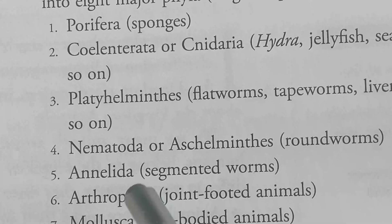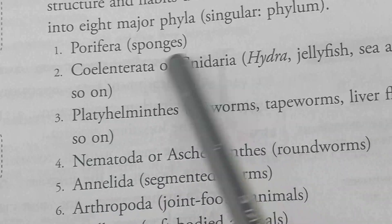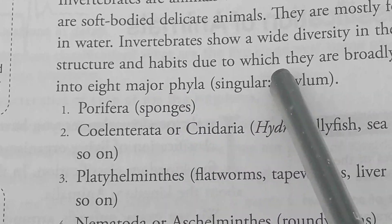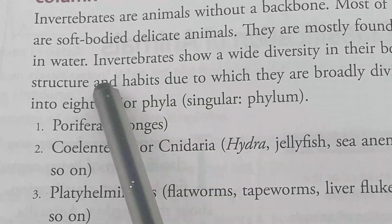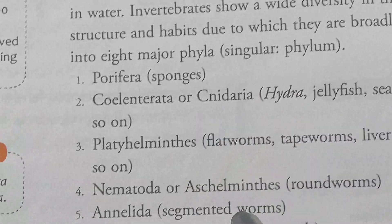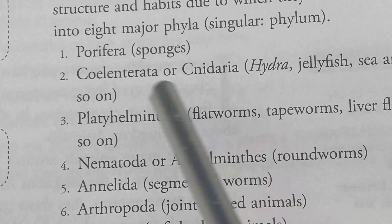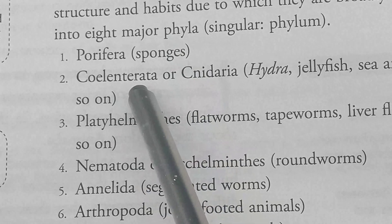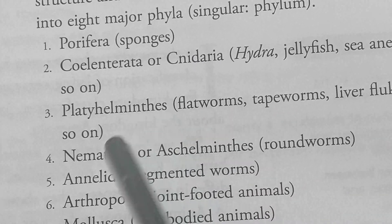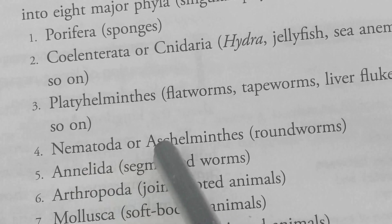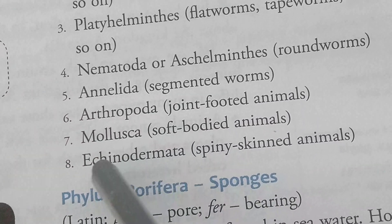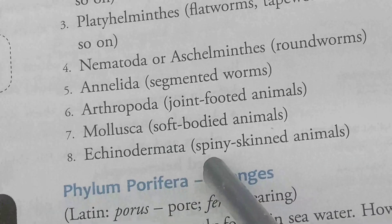Students, you have to learn the eight major phyla under invertebrates. Invertebrates are divided into eight major phyla. They are: Porifera, Coelenterata or Cnidaria, Platyhelminthes, Nematoda or Aschelminthes, Annelida, Arthropoda, Mollusca, and Echinodermata.